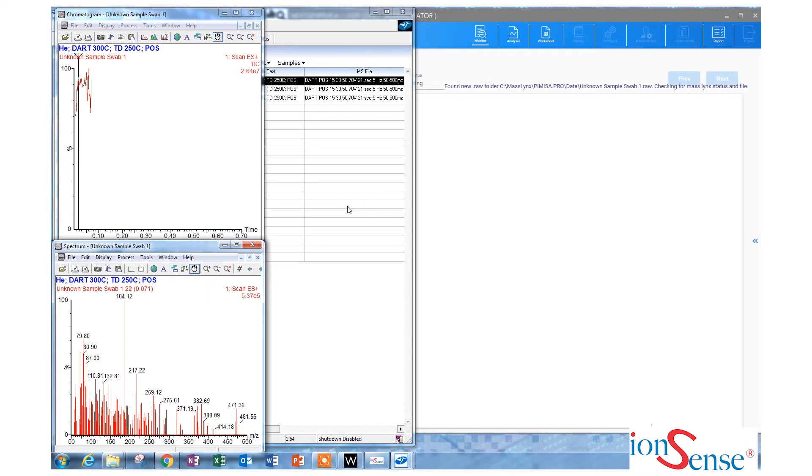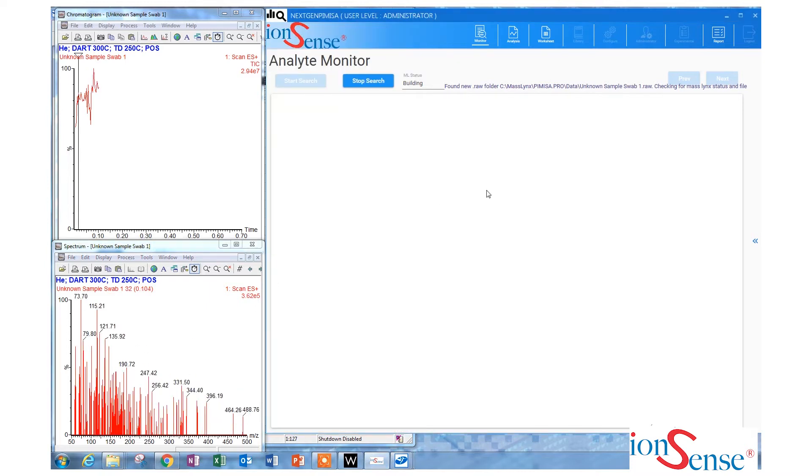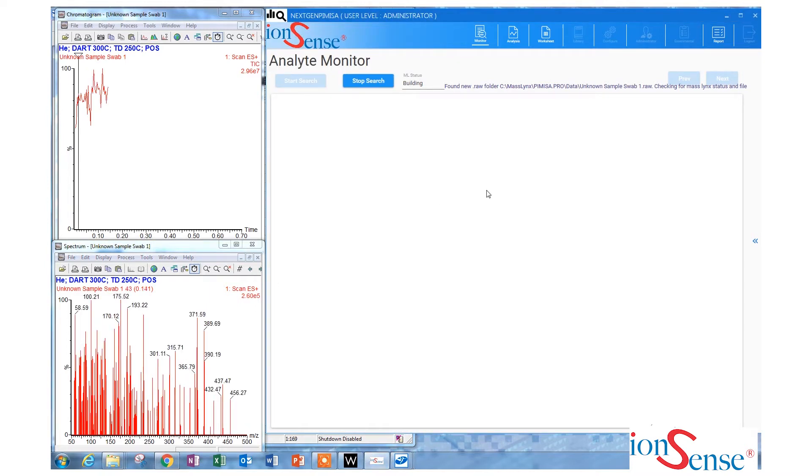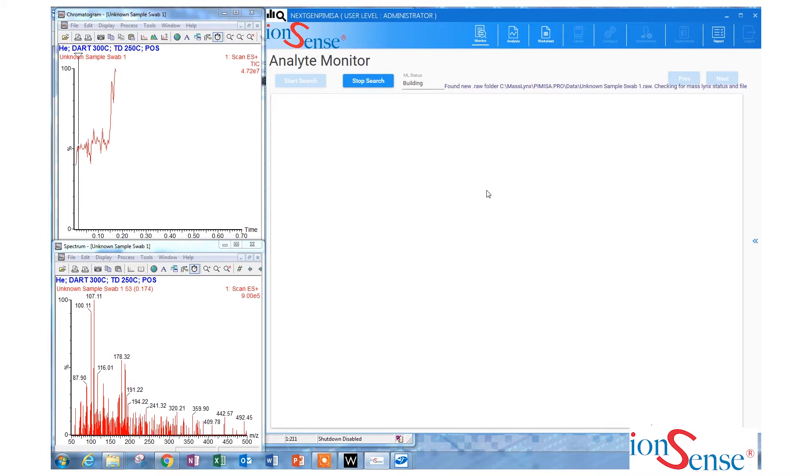With the MS software, you can view the live acquisition of both the total ion chromatogram and the mass spectrum. The analysis of the swab only takes about 8 seconds.